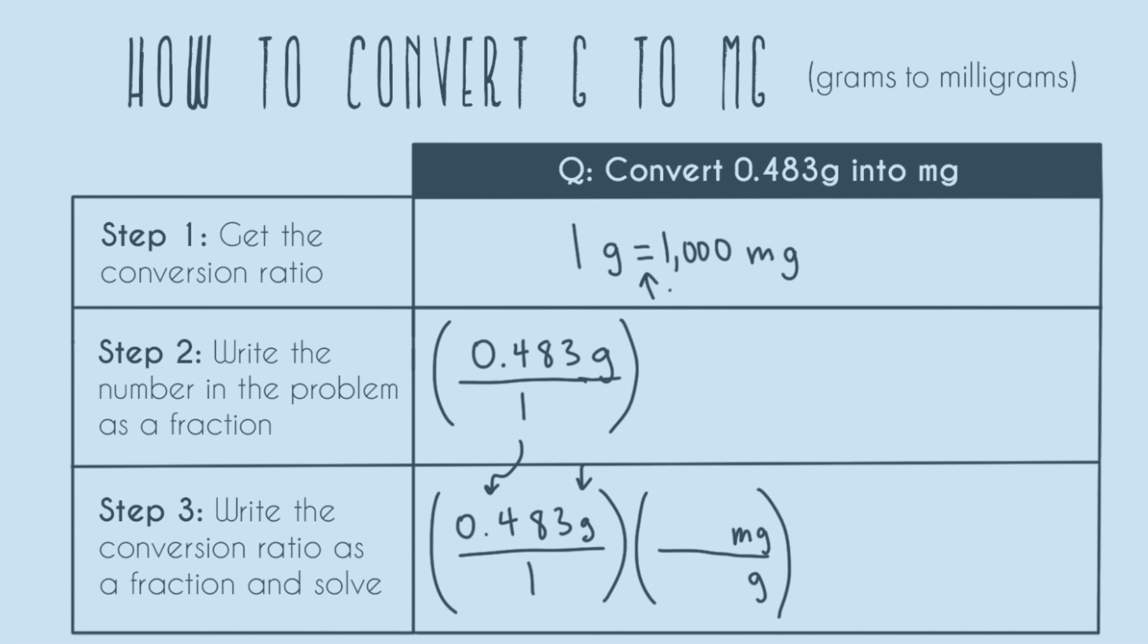So we see that we have 1,000 milligrams, so that's still going to be here, 1,000 milligrams. And then we see that we have 1 gram, so 1 is still going to be here next to gram.